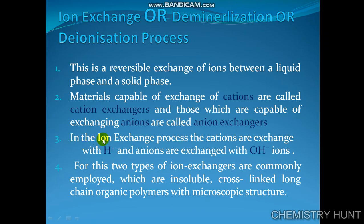In the ion exchange process, the cations are exchanged with hydrogen ions and anions are exchanged with hydroxide ions. For this, two types of ion exchangers are commonly employed which are insoluble, cross-linked, long-chain organic polymer with microscopic structure.